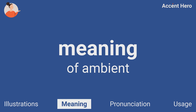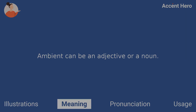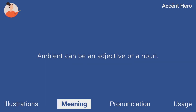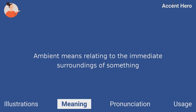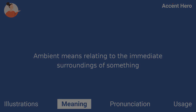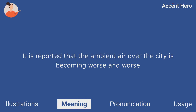Meaning. Ambient can be an adjective or a noun. Ambient means relating to the immediate surroundings of something. For example, you can say: it is reported that the ambient air over the city is becoming worse and worse.